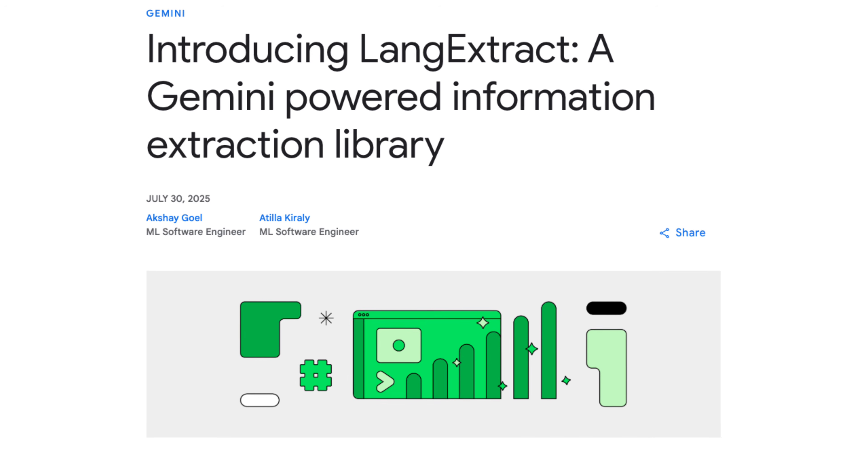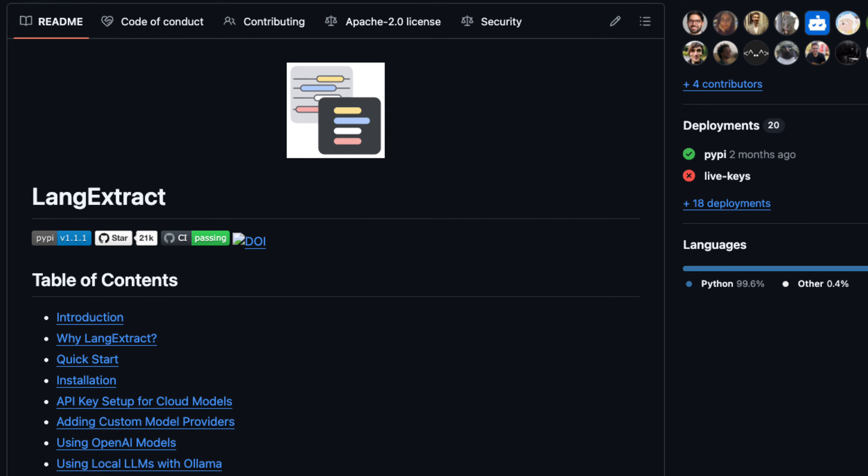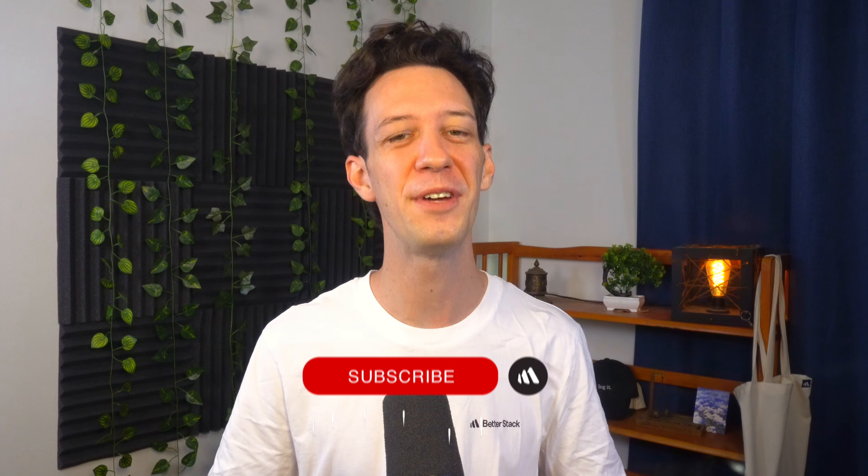You'd expect the fix to be more rules, more NLP, but some devs are actually doing the opposite. This is LangExtract — a free Google open-source tool that's quietly growing, and fast.